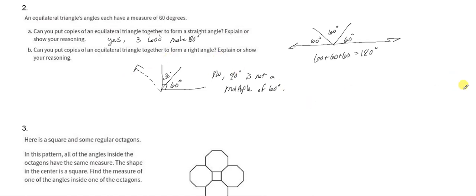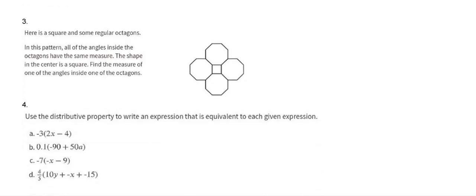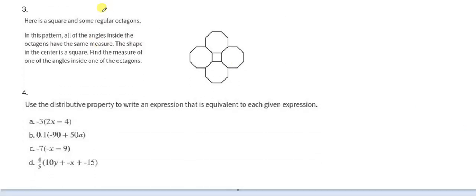Alright, and then number three. We've got a square with some regular octagons. It wants us to find the angles inside the octagon. So I can see an angle right there. Alright, I'm going to go right here and focus in on this. Okay, so if we can kind of draw that out a little bit.